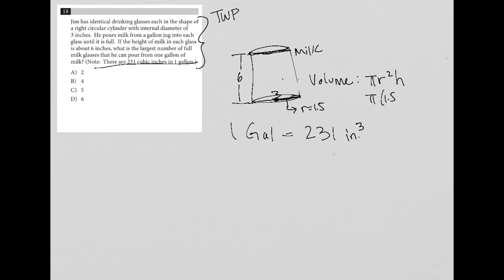And then h, we were just given, is six. So we go to our calculator and figure out, well, what is pi? So let's do the squared first. What is 1.5 squared? So I get 2.25.